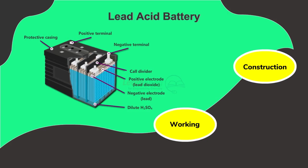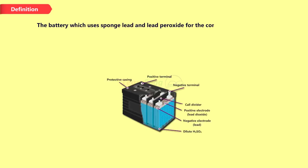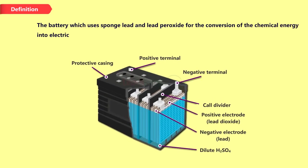Construction, working, application. The battery which uses sponge lead and lead peroxide for the conversion of the chemical energy into electrical power, such type of battery is called a lead-acid battery.